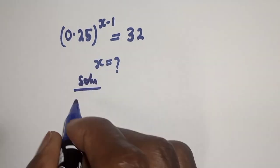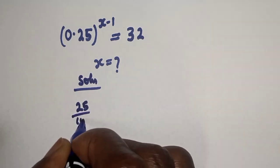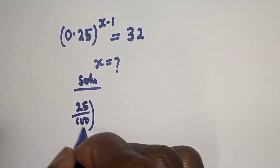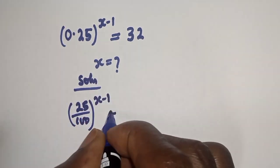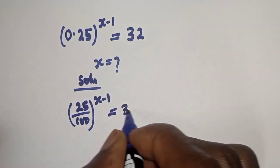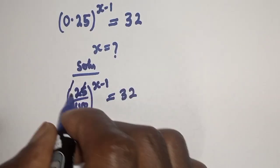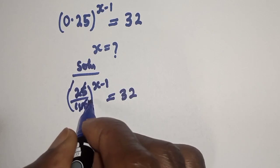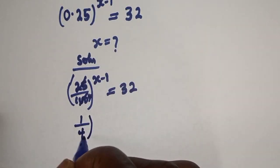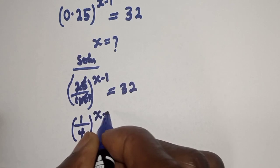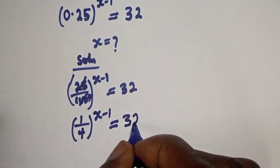0.25 can be written as 25 over 100 to the power of s minus 1, is equal to 32. Simplifying 25 over 100, we get 1 over 4, raised to the power s minus 1, is equal to 32.